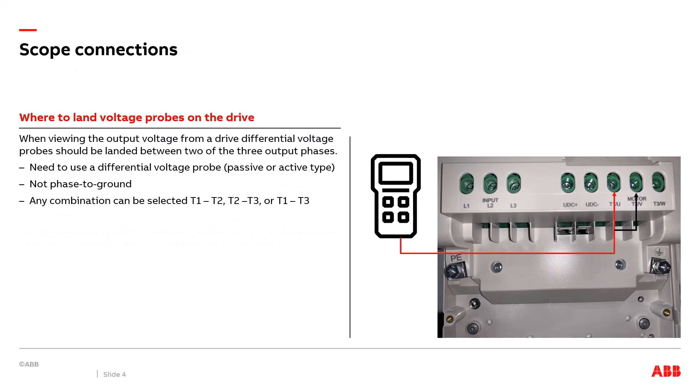We're first going to discuss what the output voltage waveform looks like on an oscilloscope. We need to hook up voltage probes to the output terminals T1, T2, and T3. It's important to use a differential voltage probe — active or passive. We hook up the probe between any two terminals: T1 to T2, T2 to T3, or T1 to T3. We do not hook up between T1, T2, or T3 and ground. We're referencing phase to phase, not voltage to ground.